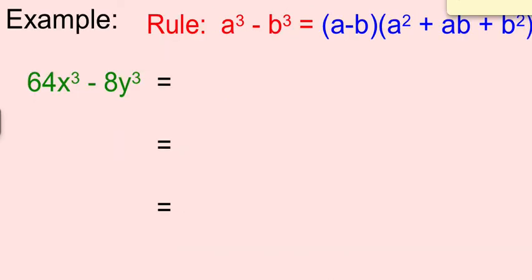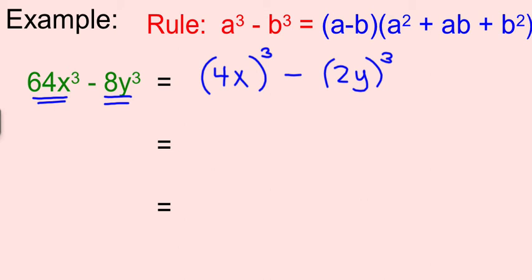Last example. All right, we have 64x³, so I'm going to rewrite 64 as 4 times 4 times 4. I'm going to rewrite x³. So what that is writing as is 4x times 4x times 4x is 4x³. And then the next piece is 8y³, so it's minus 2 times 2 times 2 is 8. y times y times y is y³. So this whole thing is my A, and this whole thing is my B.